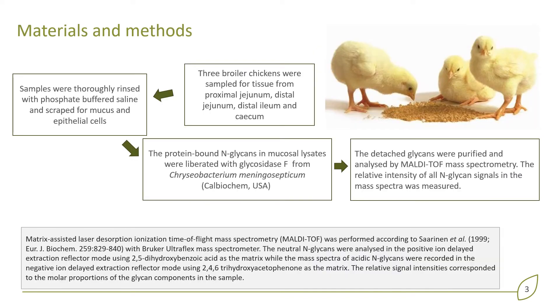Three broiler chickens were sampled for tissue from jejunum, ilium, and cecum. The samples were rinsed and scraped for mucus and epithelial cells.